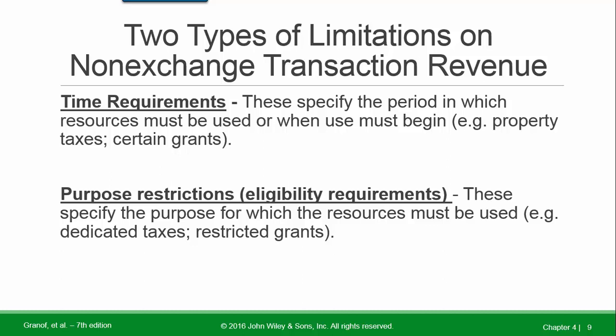There are two types of limitations on non-exchange transaction revenue. The first is a time requirement, which specifies the period in which resources must be used or when use must begin — for example, dedicated taxes. The second is purpose, which are eligibility requirements specifying the purpose for which resources must be used — for example, restricted grants.